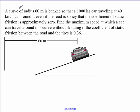This is Dr. Holt. In this problem we have a curve of radius 60 meters. It's banked so that a thousand kilogram car traveling at 40 kilometers per hour can round the curve, even if the road is so icy that the coefficient of static friction is approximately zero. Find the maximum speed at which a car can travel around the curve without skidding if the coefficient of static friction between the road and the tires is 0.36.